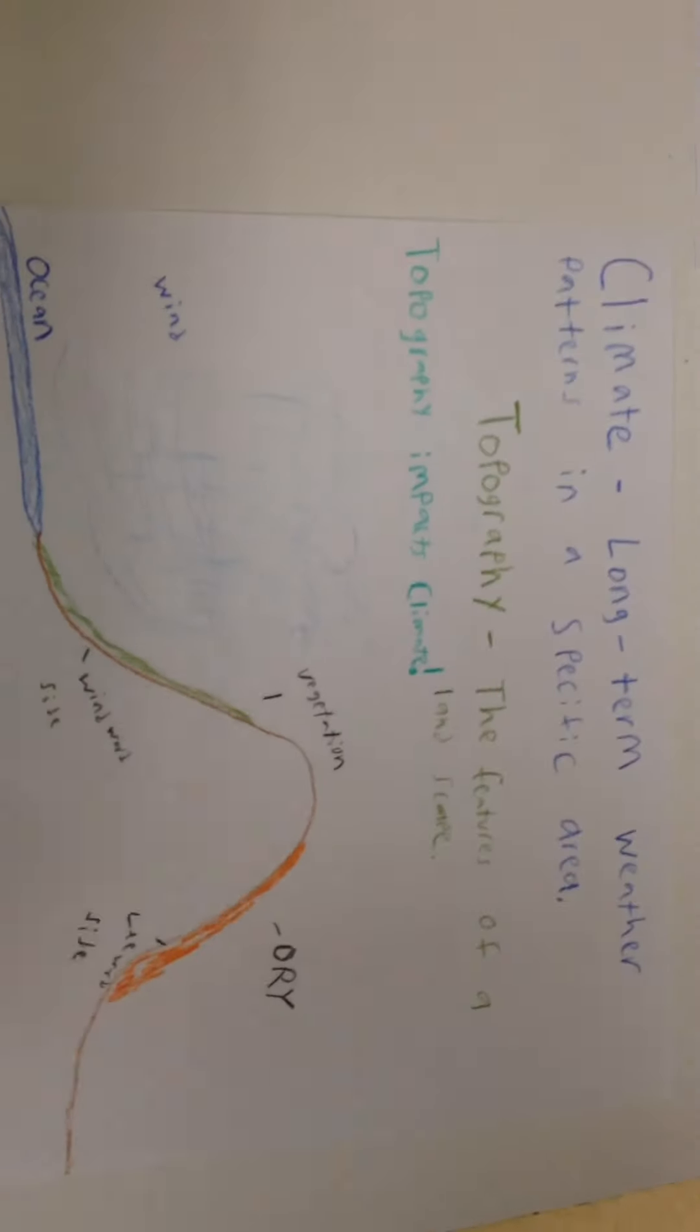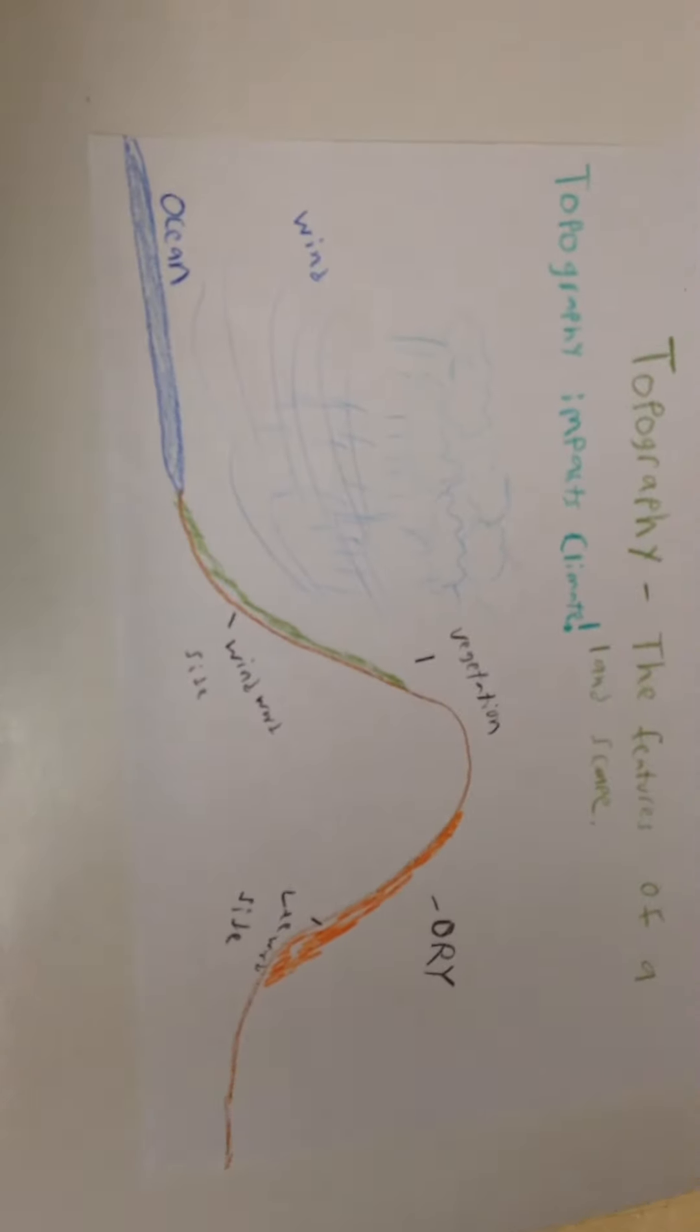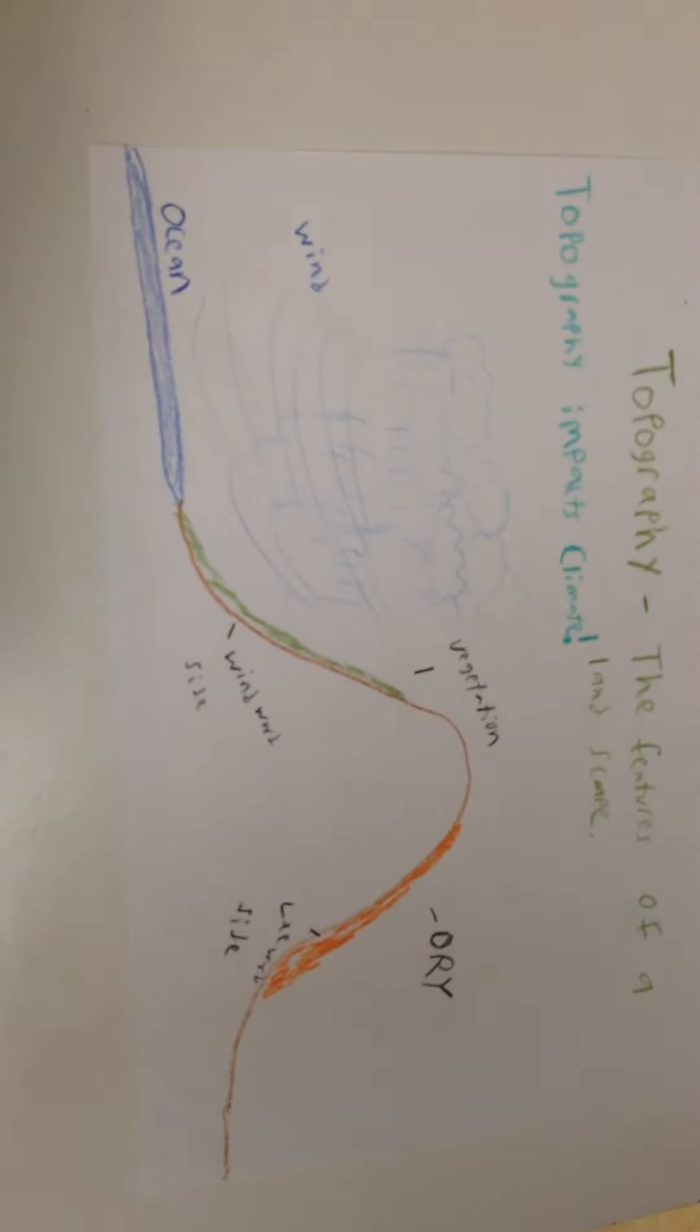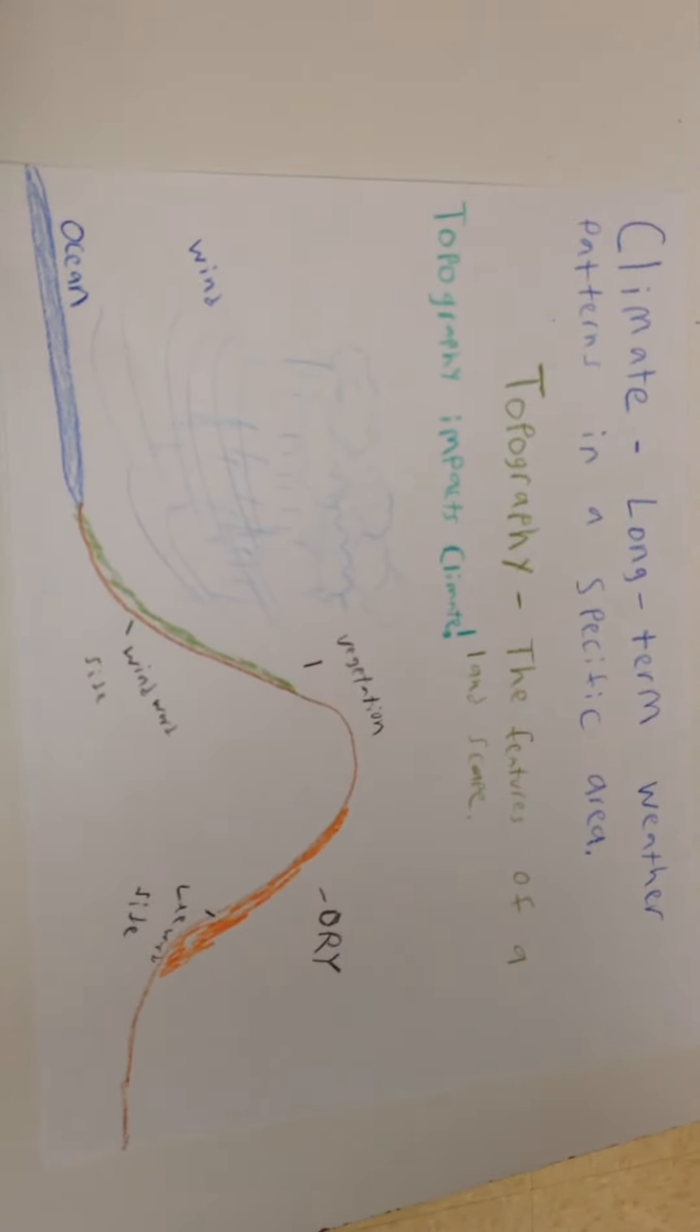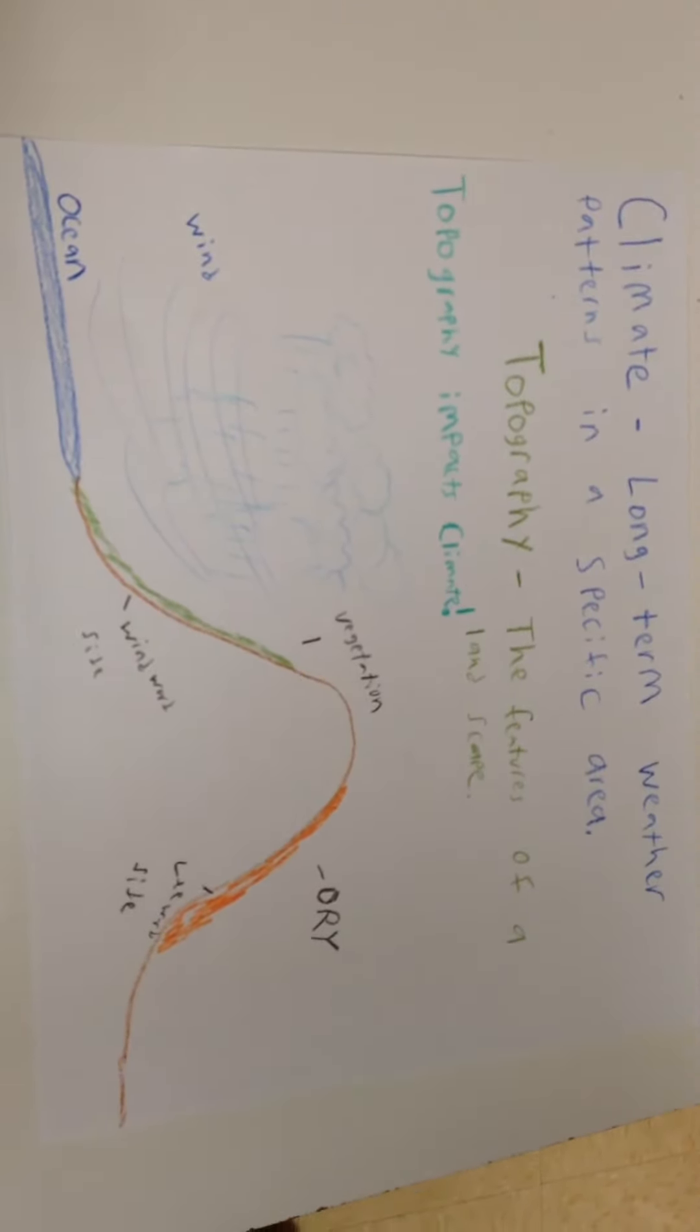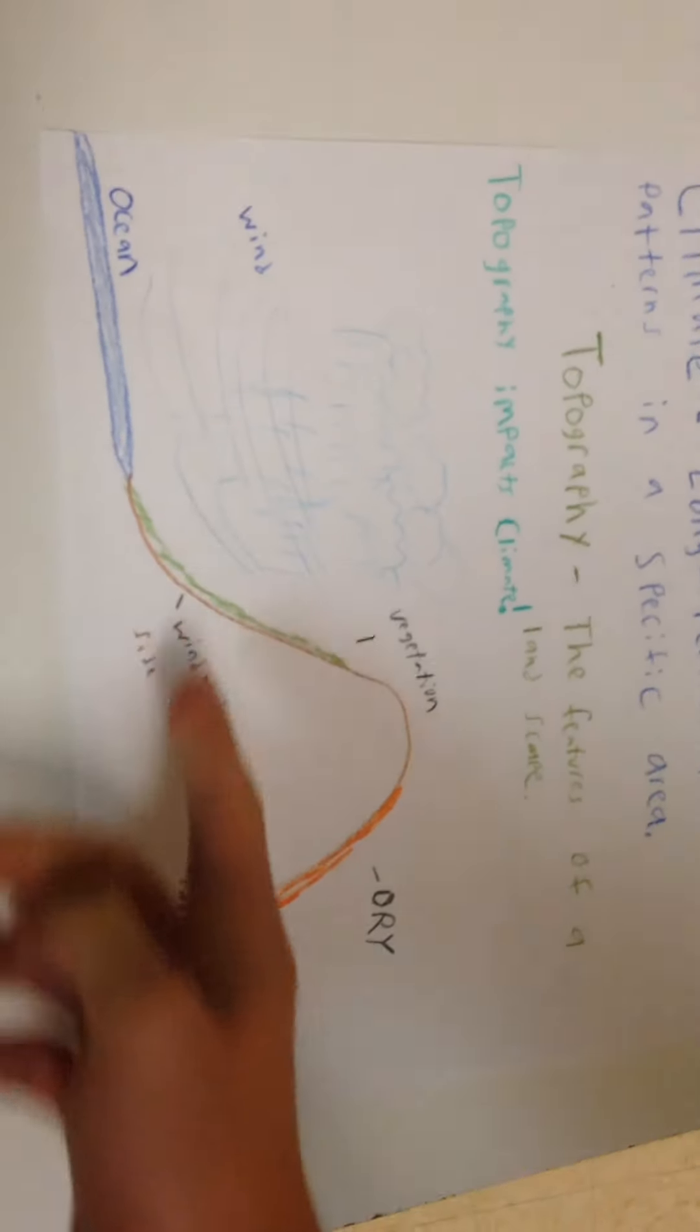Over here we have vegetation and rain and clouds and wind on one side, which is the windward side, but all on the same mountain. The other side of the mountain, which is the leeward side, is very dry. This would definitely affect the climate on this side rather than that side.